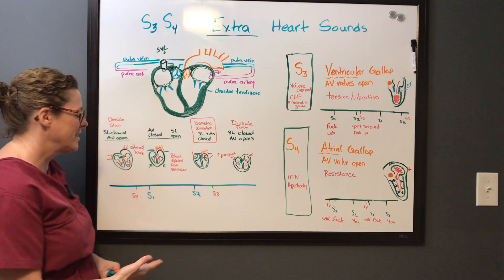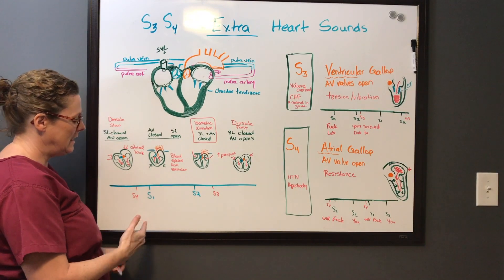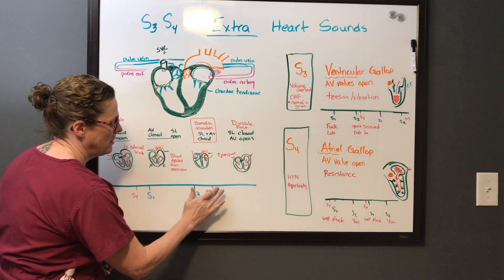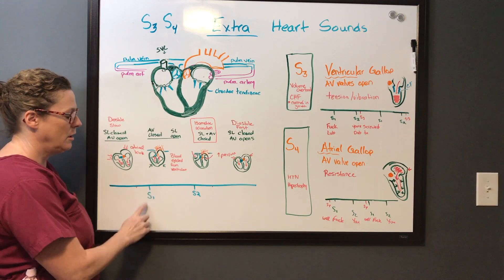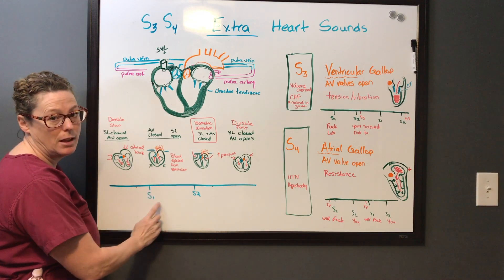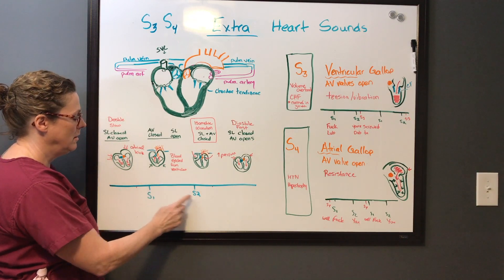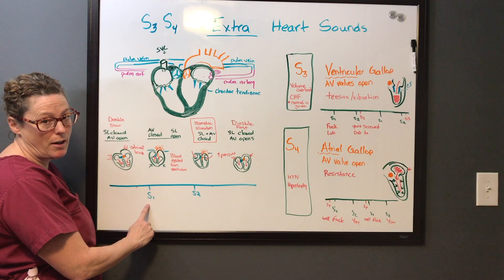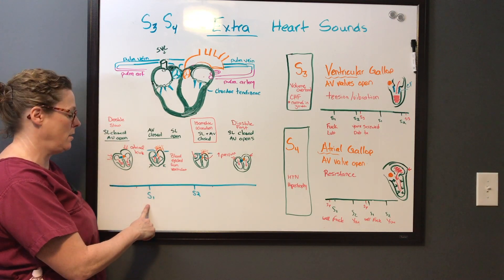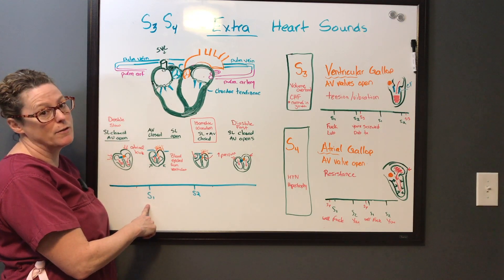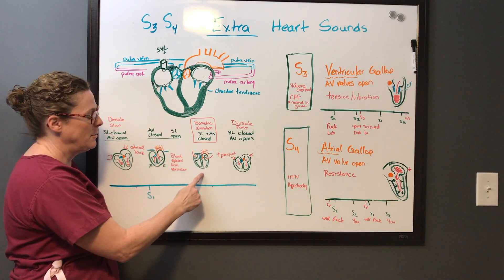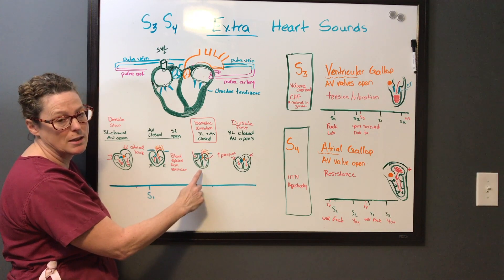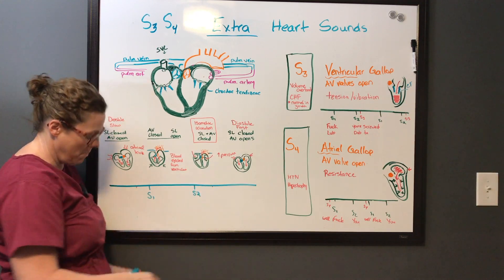When we come back to the heart, let's review S1 and S2. Lub-dub, lub-dub — AV valves closing causes the lub sound, semilunar valves opening allows blood to eject. The semilunar and AV valves are briefly closed at the same time, but the sound we're hearing is the semilunar valves closing — that's the dub.